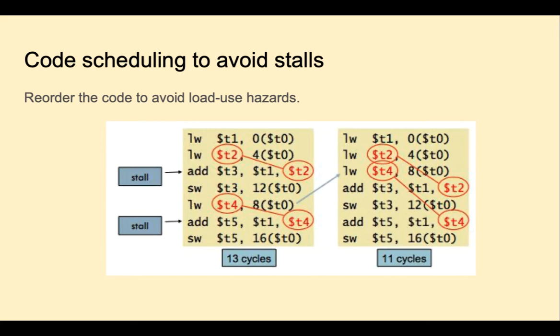So who's doing this code scheduling? Well, don't bother doing it in Mars because Mars is emulating a non-pipeline CPU so there are no hazards. We only get hazards once pipelining is introduced. The code scheduling could be done by a compiler or a CPU. And we'll talk much more about that later.